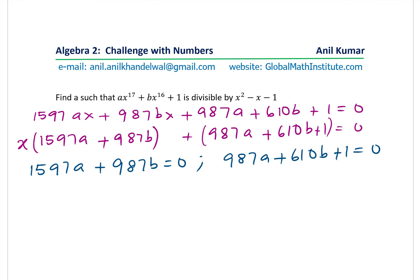Now from here, we get a solution and that we could write a as equal to 987. You could write negative here also, but we'll put negative for b, 987 and b as equal to negative 1597. So that definitely gives you a solution for one of our equations. And if it is correct, then the second equation should also work out. So what you could do here is substitute this in the second equation.